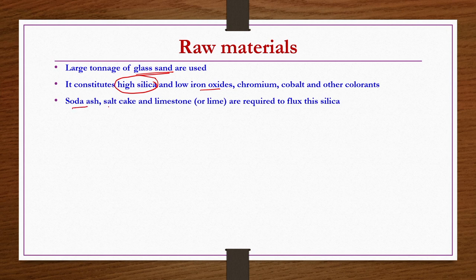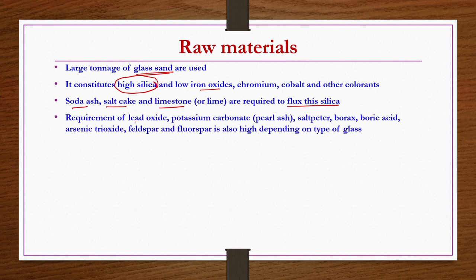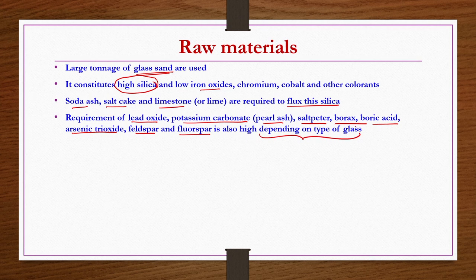Soda ash, salt cake, and limestone or lime are required to flux the silica in the process. The requirement for lead oxide, potassium carbonate or pearl ash, saltpeter, borax, boric acid, arsenic trioxide, feldspar, and fluorspar also depends on the type of glass. These are minor ingredients, but their requirement is very much essential, and how much is required depends on the application or type of glass.